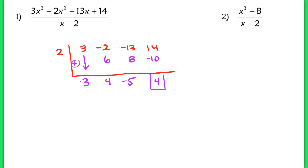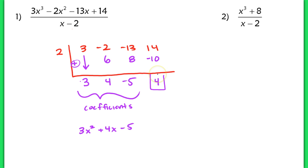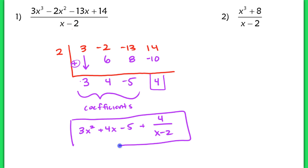So what does this all mean? These numbers below represent the coefficients of the polynomial that is one degree less than what you started with. Since we have x cubed, this represents 3x squared. This term represents 4x, going in descending order. This is just negative 5 because we have x to the 0 — so negative 5 is the constant. This last term is the remainder, so we have a remainder of 4 over x minus 2. That's our first synthetic division problem.